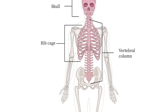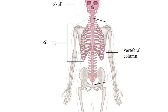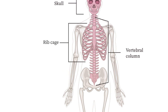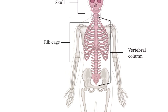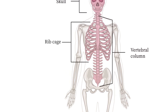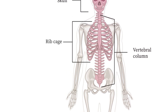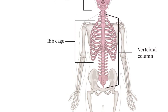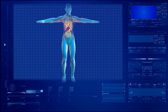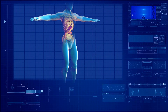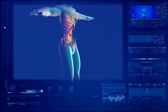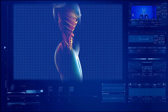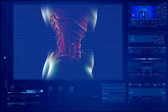The axial skeleton is the central core of the body, composed of the skull, the vertebral column, and the thoracic or rib cage, which includes the ribs and sternum. These bones protect our vital organs such as the brain, heart, and lungs.